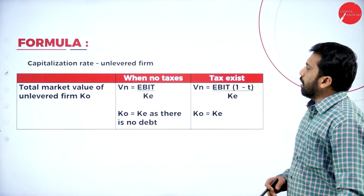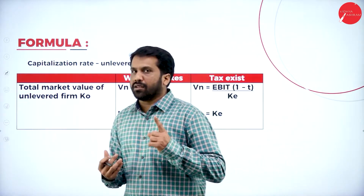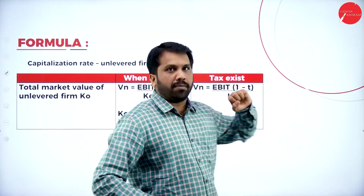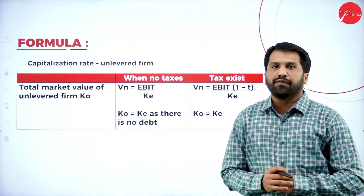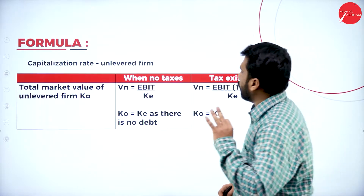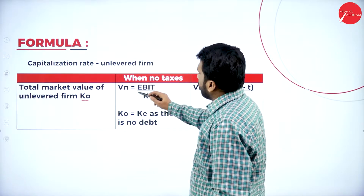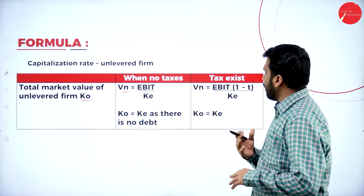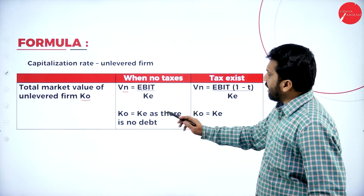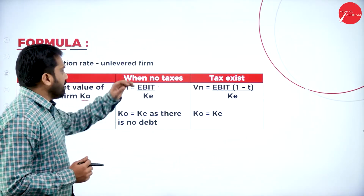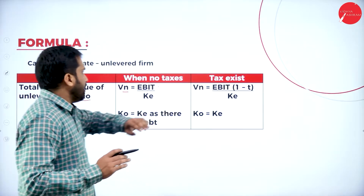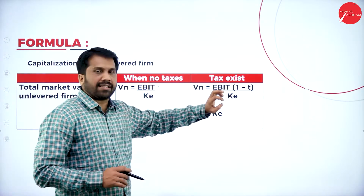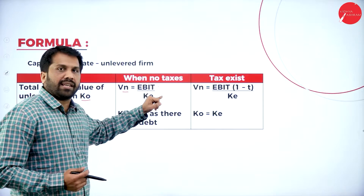Now we go directly to the formulas. Unlevered means there is no debenture. Under the capitalization rate for an unlevered firm, the total market value of the unlevered firm is: VU = EBIT divided by cost of equity (KE). With tax, it becomes EBIT × (1 − tax) divided by cost of equity. So KO equals KE since there is no debenture. If tax is present, include (1 − tax); if no tax, omit it.